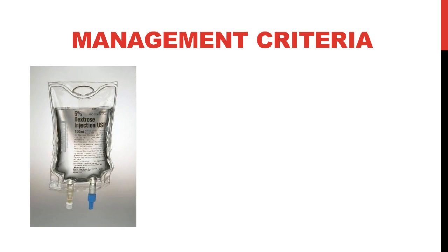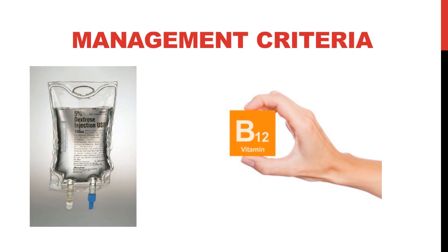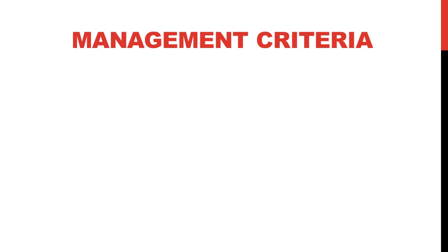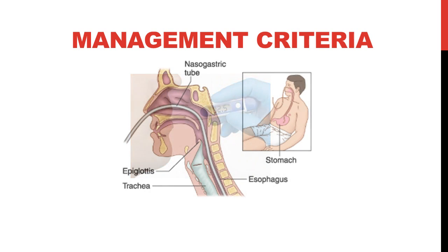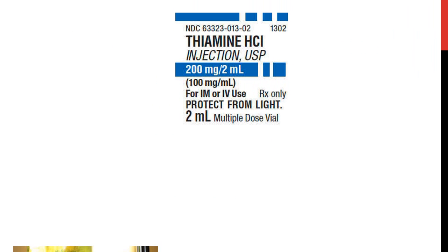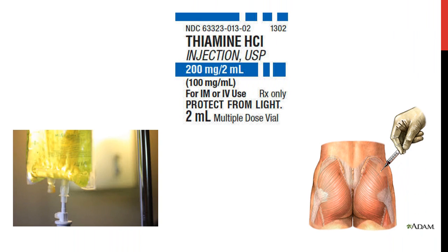IV dextrose is also given to regulate hypoglycemia, and vitamin B1 as a prophylaxis for Wernicke-Korsakoff syndrome. Ensure that the patient maintains a normal body temperature. If the ingestion occurred within one hour of presentation, placing a nasogastric tube and evacuating the stomach contents can be very helpful. In patients with chronic ethanol abuse, administer thiamine 100 mg intravenously or intramuscularly to prevent neurologic injury.